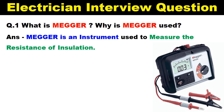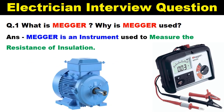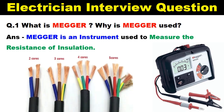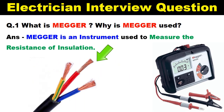Here I am showing you a picture of megger. Through this megger, resistance of insulation of any cable or a motor is measured. In a cable there are cores — R phase core, Y phase core and B phase core. In between these, if we have to measure resistance of insulation, then we use this megger.